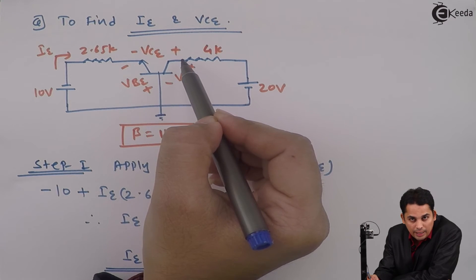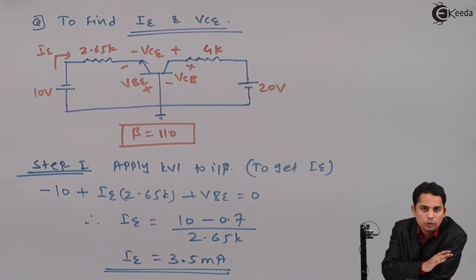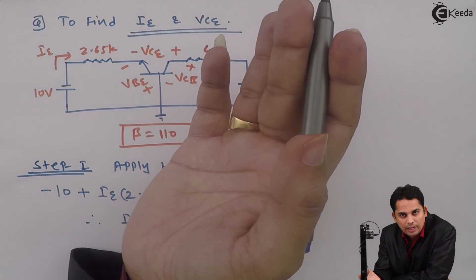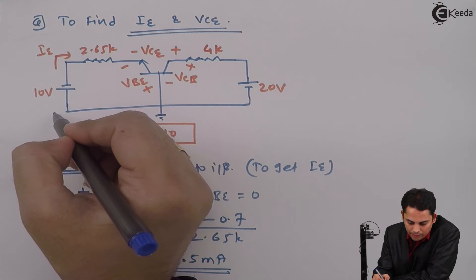These two points are between the entire circuit, which is neither on the input side nor on the output side. It is between input and output, and hence we need to apply KVL like this.